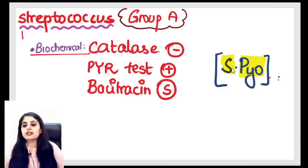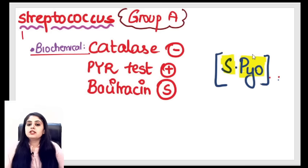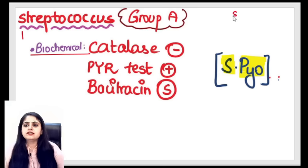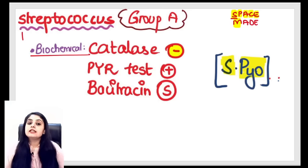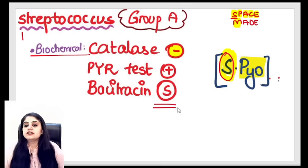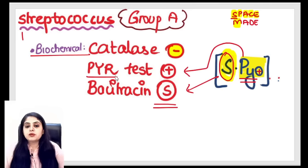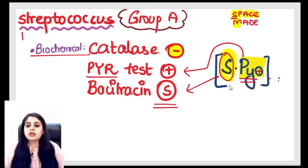For the biochemical reactions of Streptococcus pyogenes: it is catalase negative — Streptococcus was not in our 'cats need space' mnemonic for catalase positive organisms. It is bacitracin sensitive and the PYR test is positive. You don't need to know the exact reaction for the exam, but remember Streptococcus pyogenes is sensitive to bacitracin and PYR test positive.